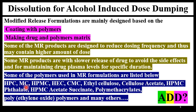Polymers used for making modified release formulations include hydroxypropyl cellulose, methyl cellulose, HPMC, HEC, CMC, ethyl cellulose, cellulose acetate, HPMC phthalate, HPMC acetate succinate, polymethacrylate, and many more such as PVP. These are the polymers generally used in modified release formulations.